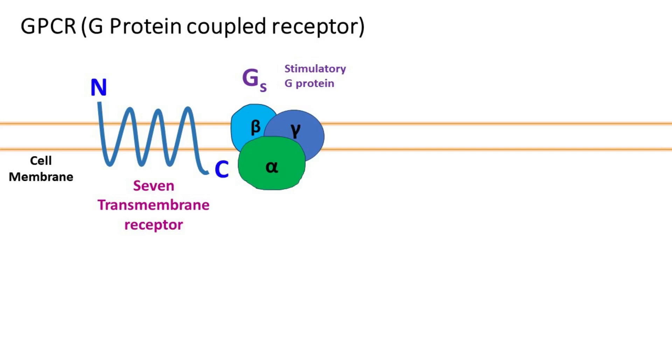The alpha domain is usually attached with GDP, and this is the inactive state of the GS subunit.